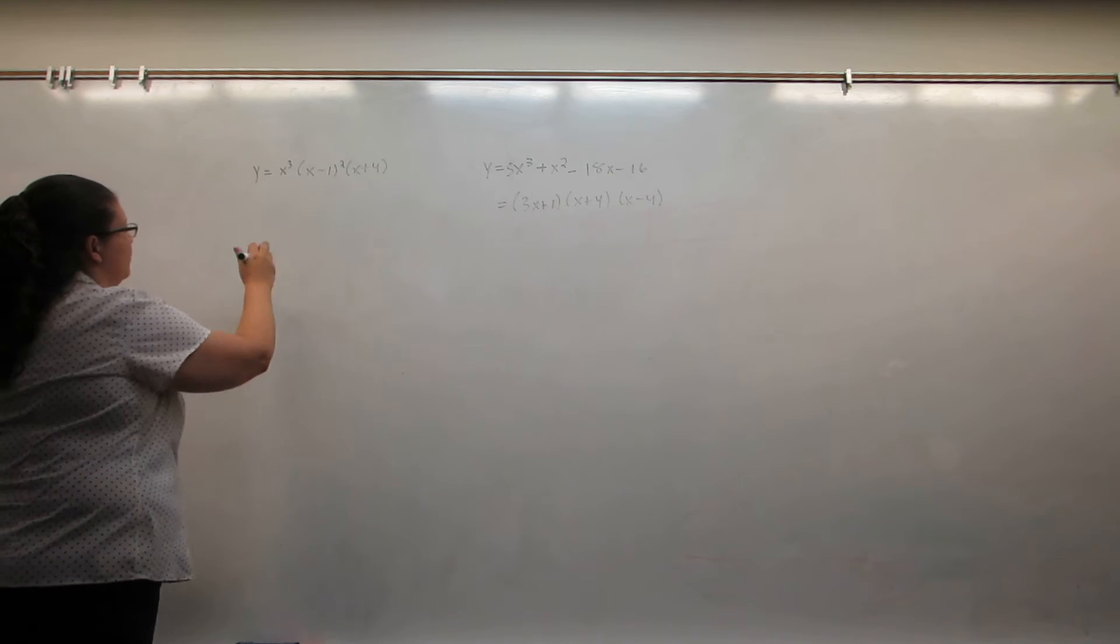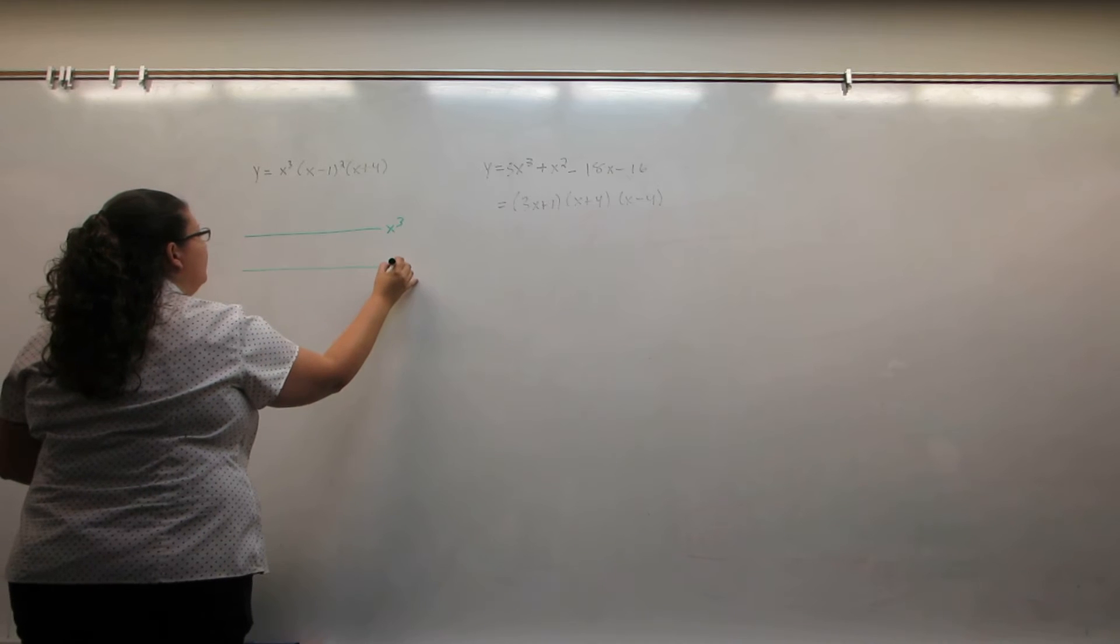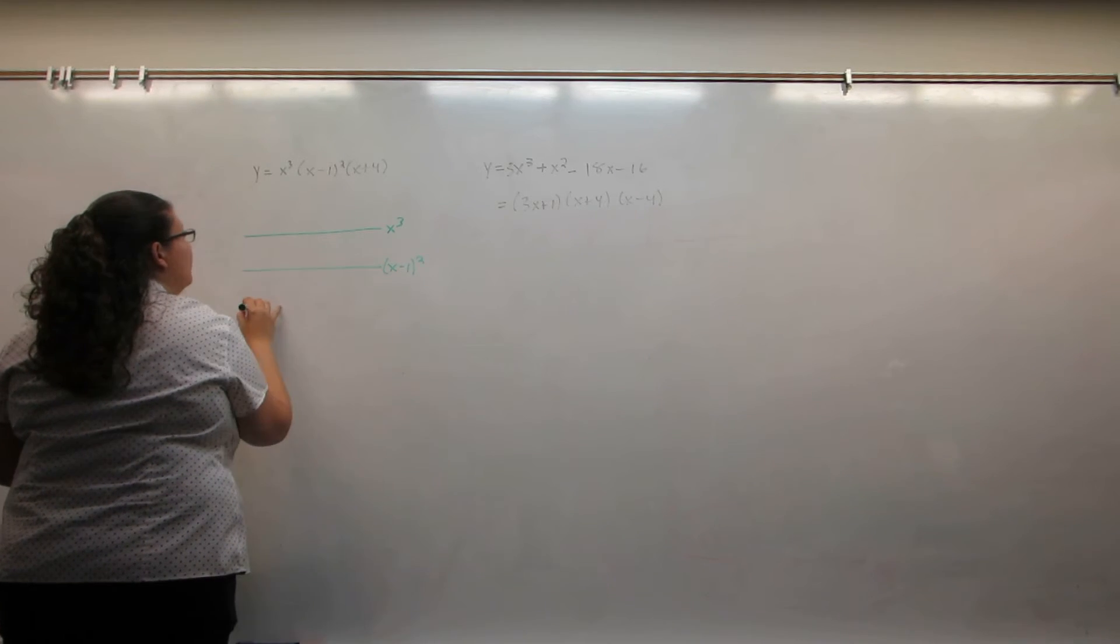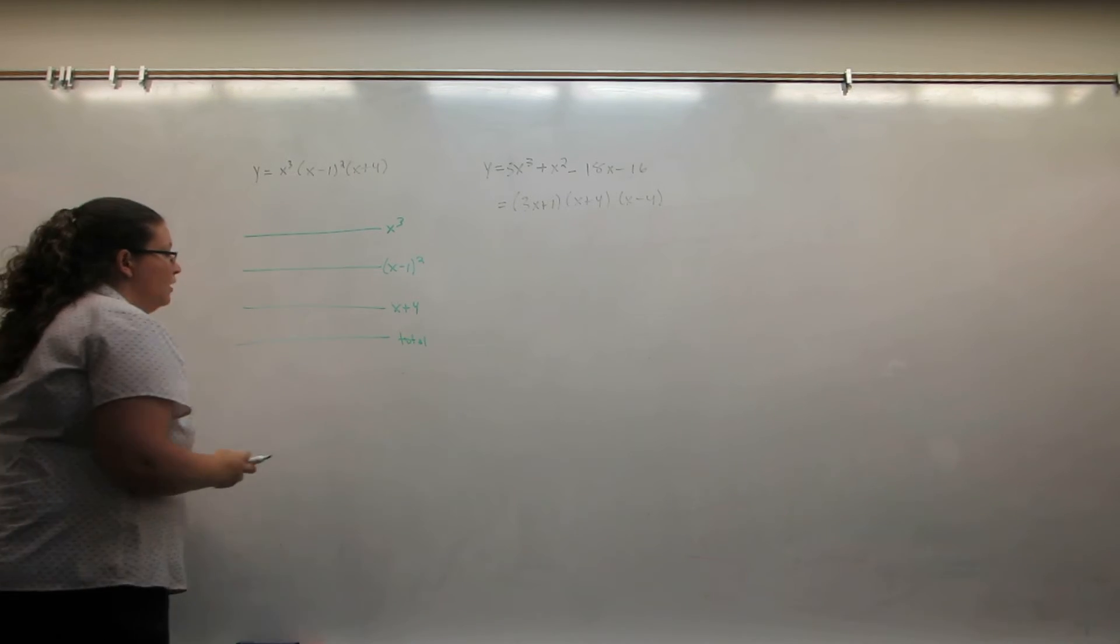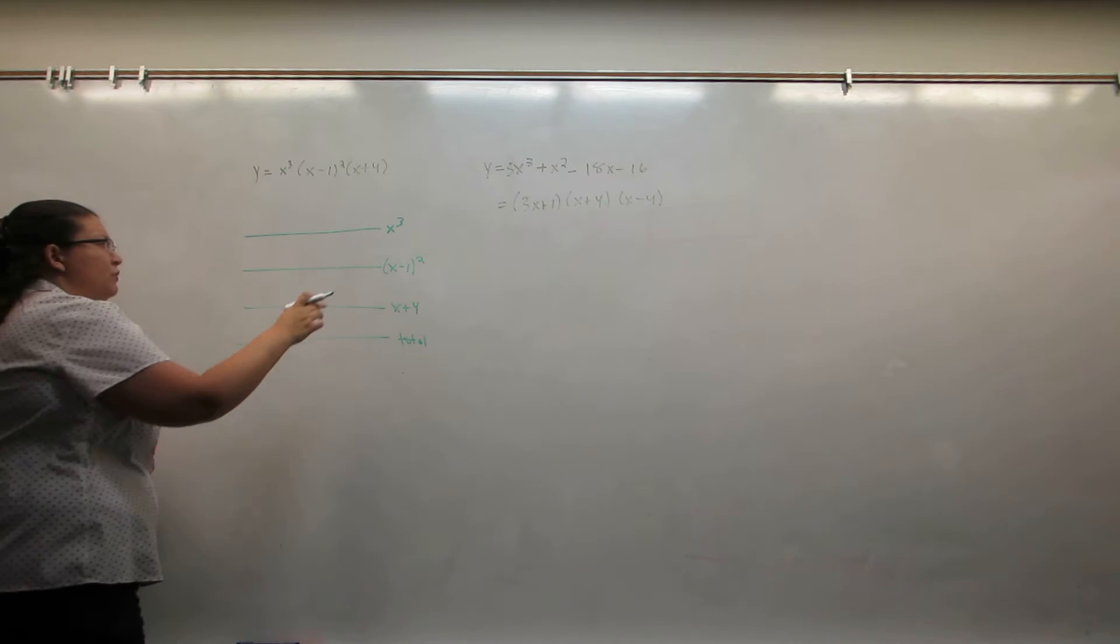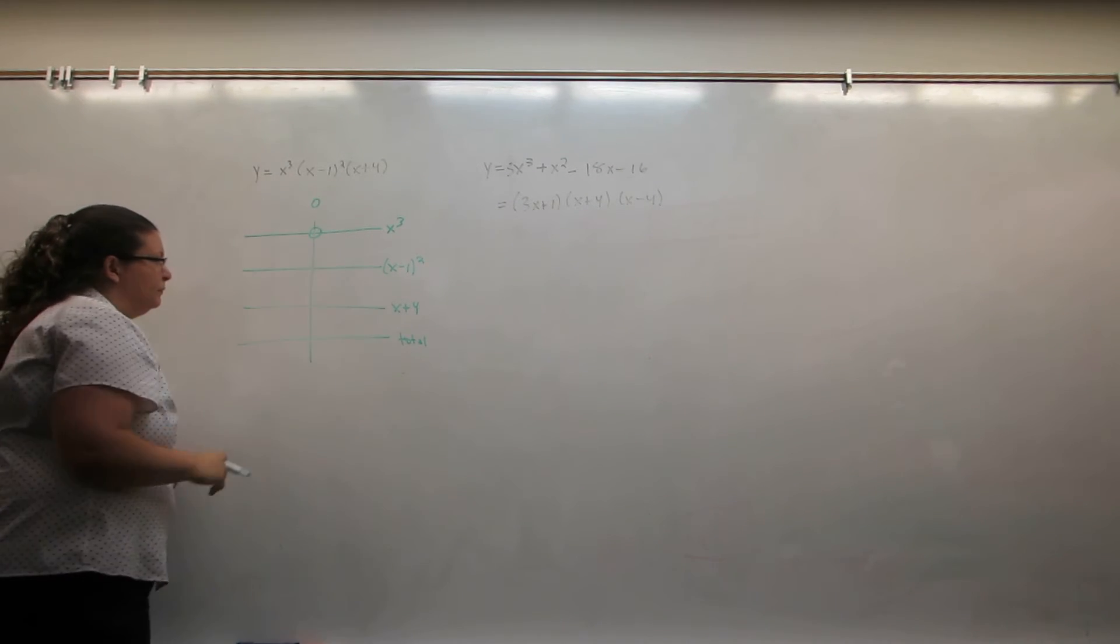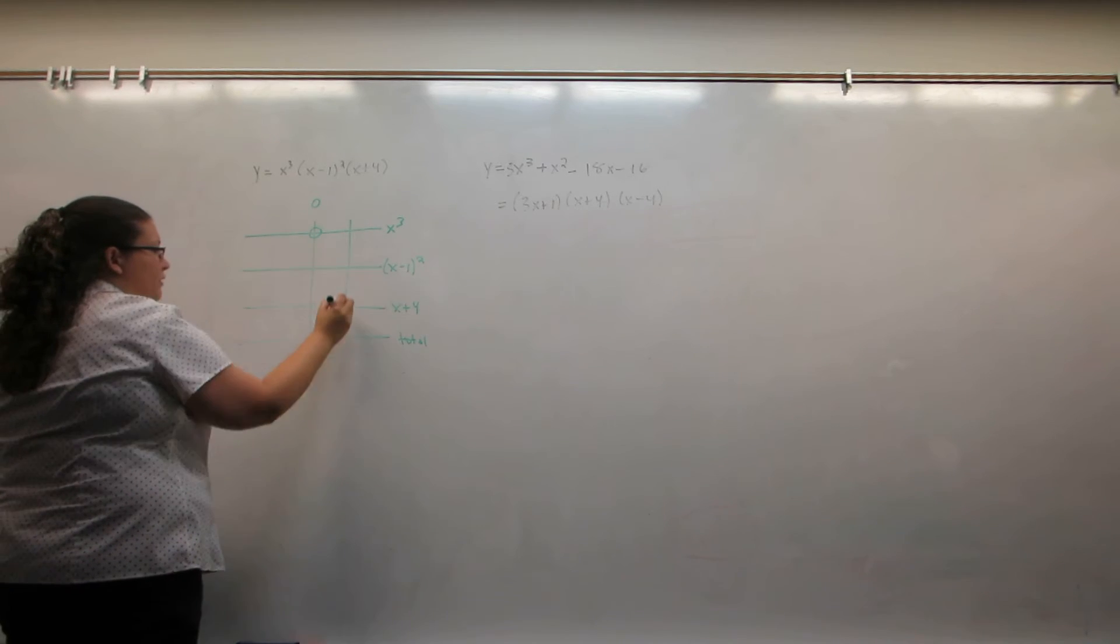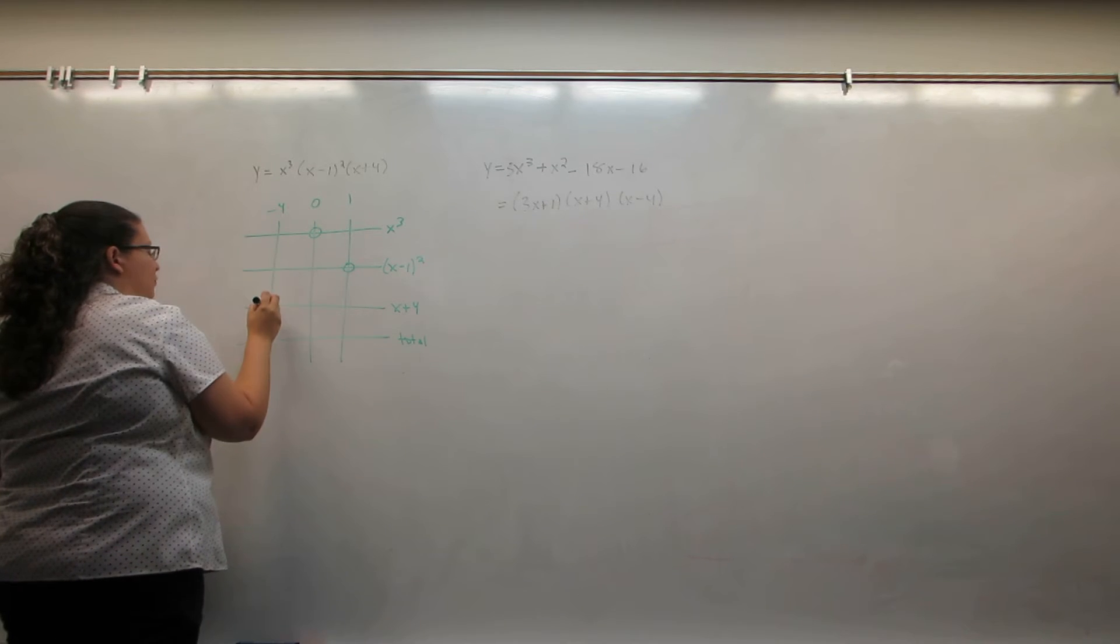So let's look at this one first. Every factor gets a horizontal line. And we get a line for the total. Then we get a vertical line everywhere something equals zero. So the first factor equals zero just at zero. The next one equals zero at one. And this one equals zero at negative four.